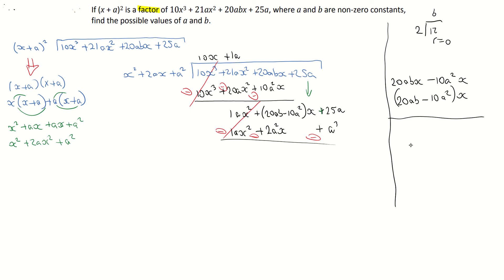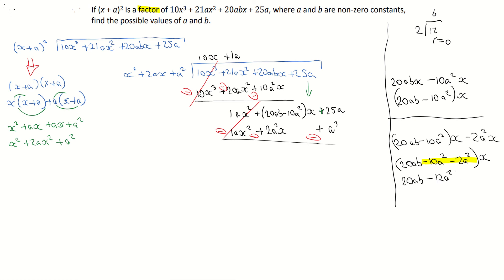Now I have: 20ab minus 10a squared x, subtract 2a squared x. There's an x common to all three, so I'm going to put that in a combined bracket: 20ab minus 10a squared minus 2a squared, all times x. Minus 10a squared minus 2a squared gives me minus 12a squared. So this is the same as 20ab minus 12a squared all times x.